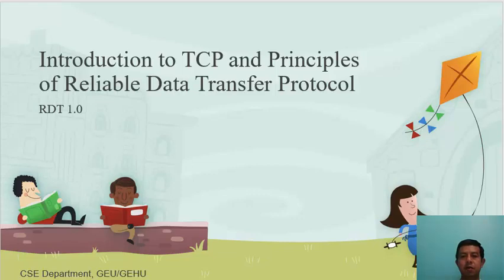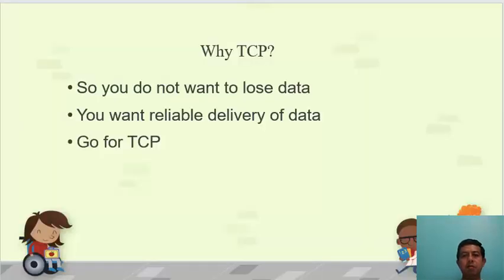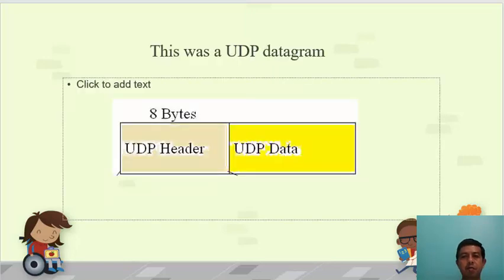Having covered UDP in detail, we now start discussing the other transport layer protocol: TCP, or Transmission Control Protocol. The very first question is why would you want to use TCP instead of UDP? The main reason is you don't want to lose your data while transmitting it. Whenever you want reliability and do not want to lose data, you go for TCP instead of UDP.